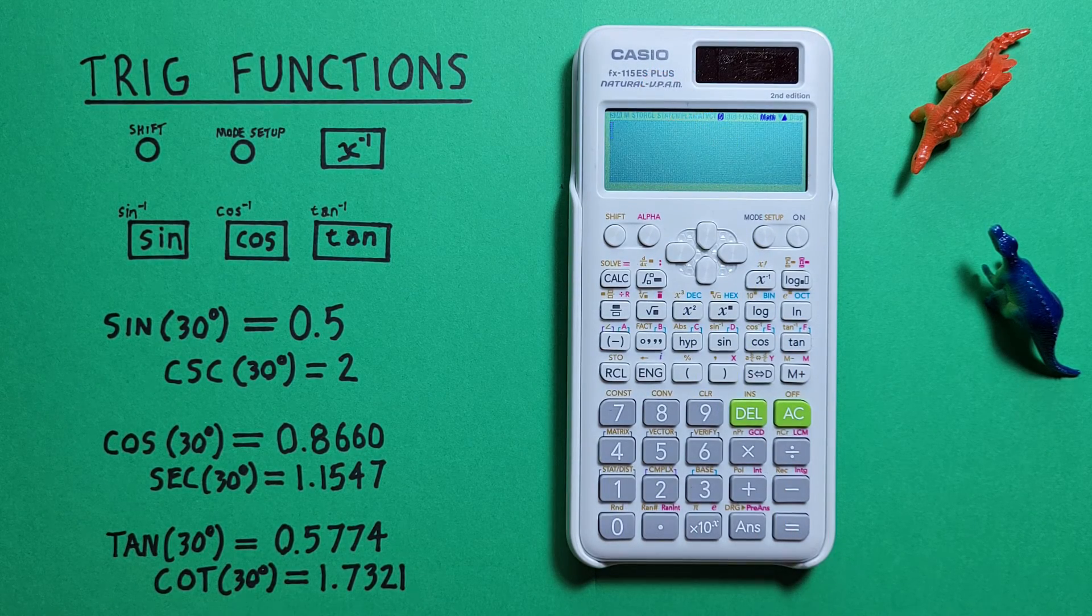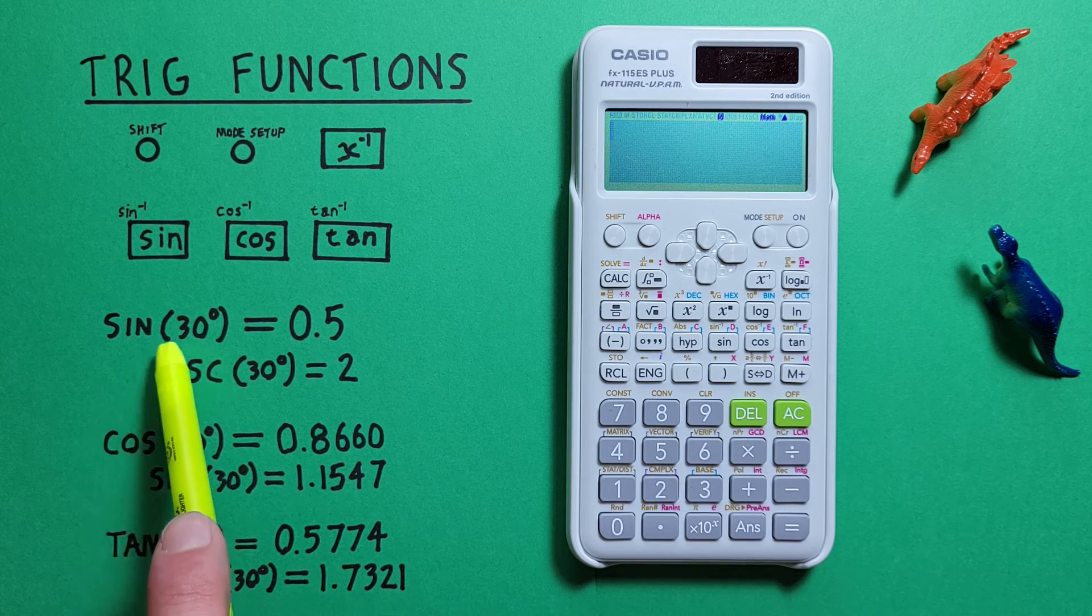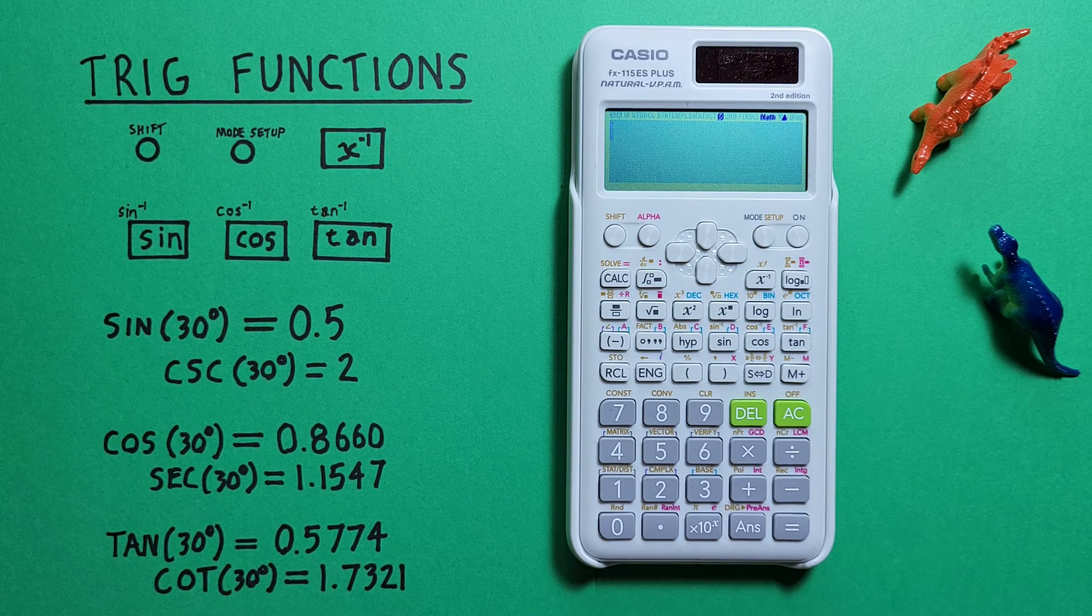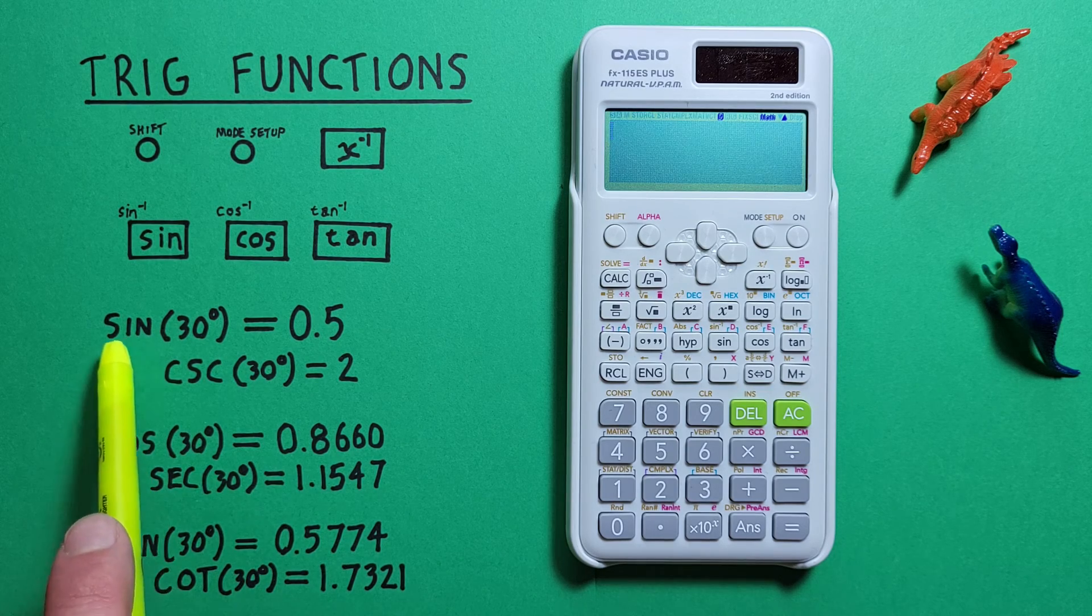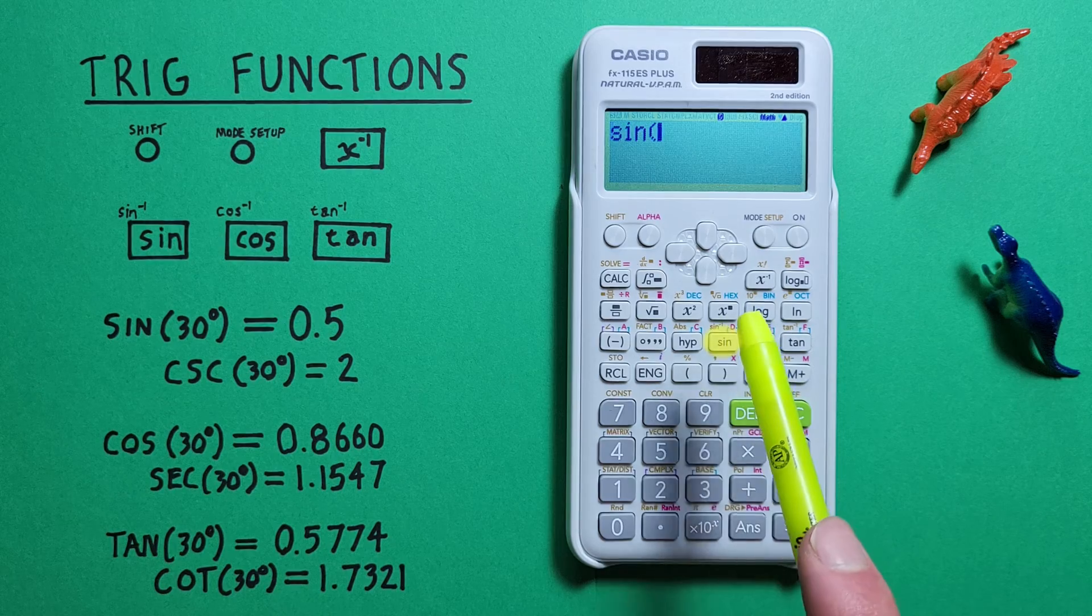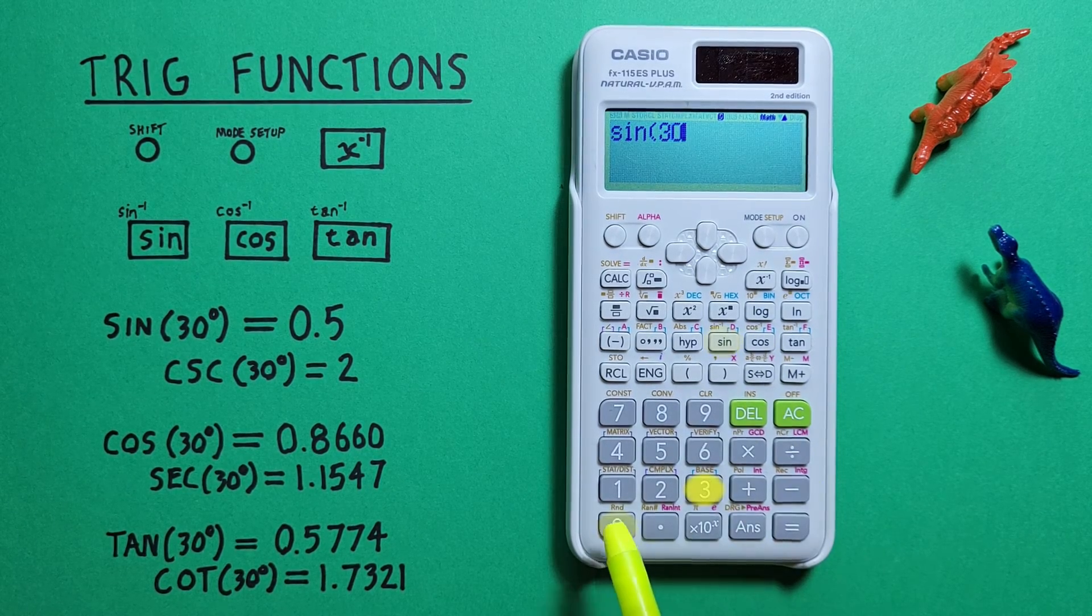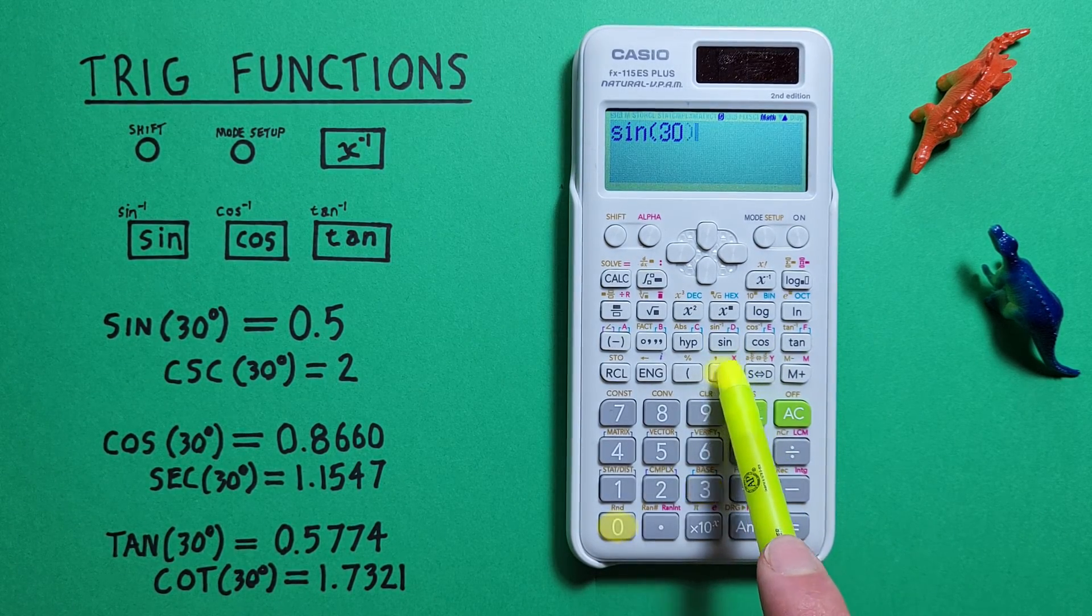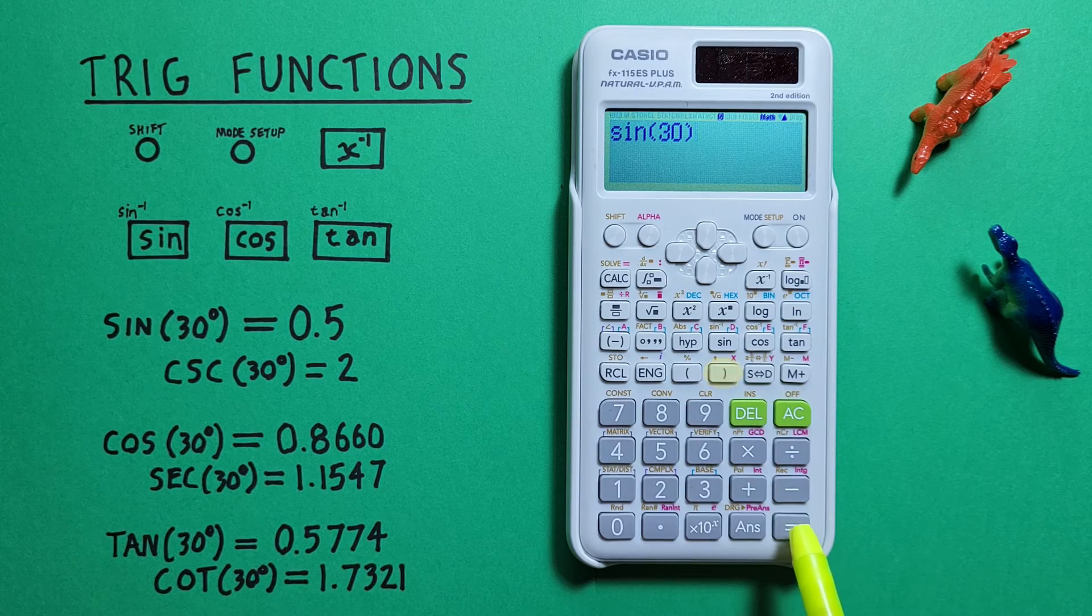For the basics if we just want to find the sine, cos, or tan of a number, for example, sine of 30 degrees, what we do is press sine 30, close our brackets, and press equals.